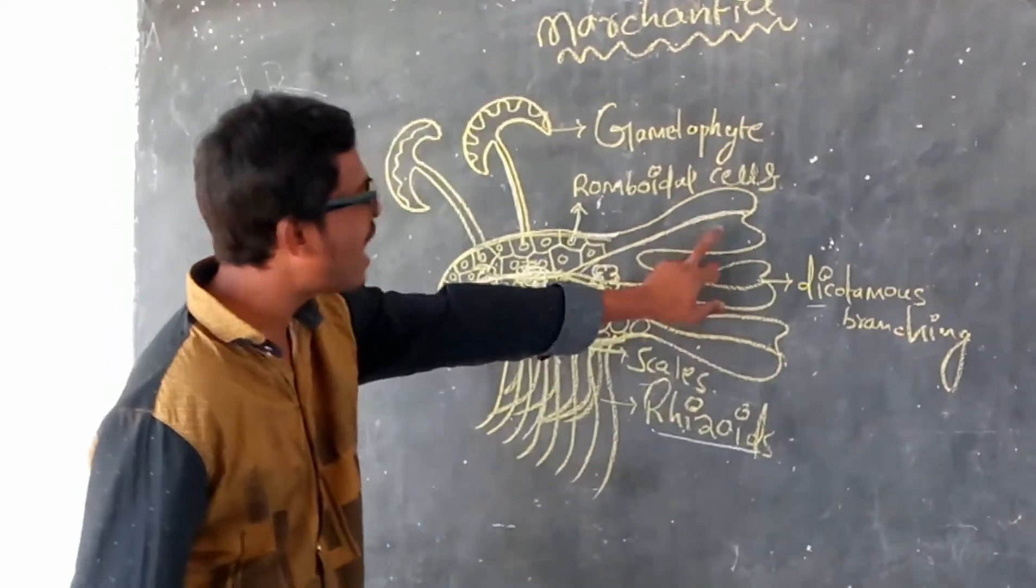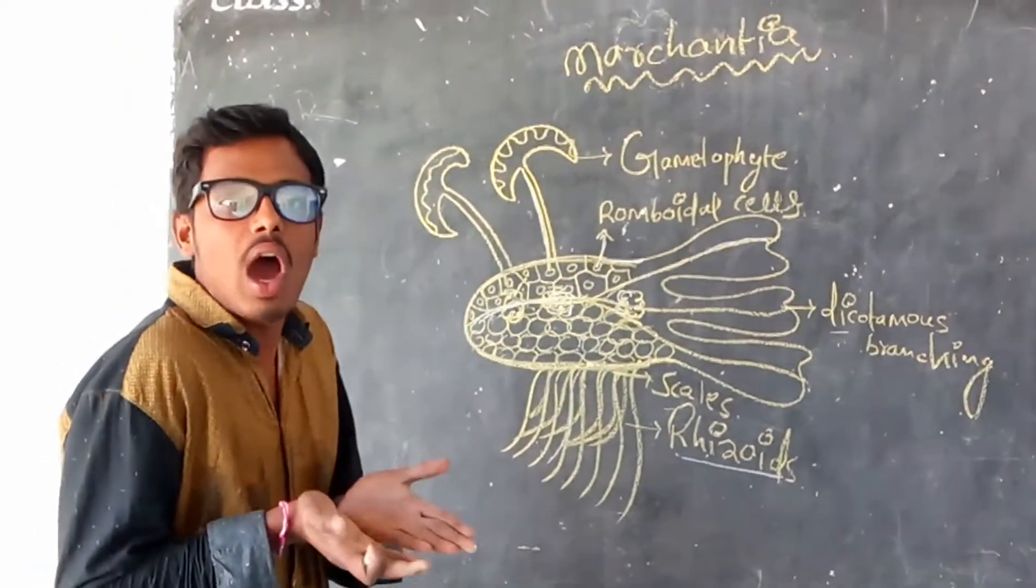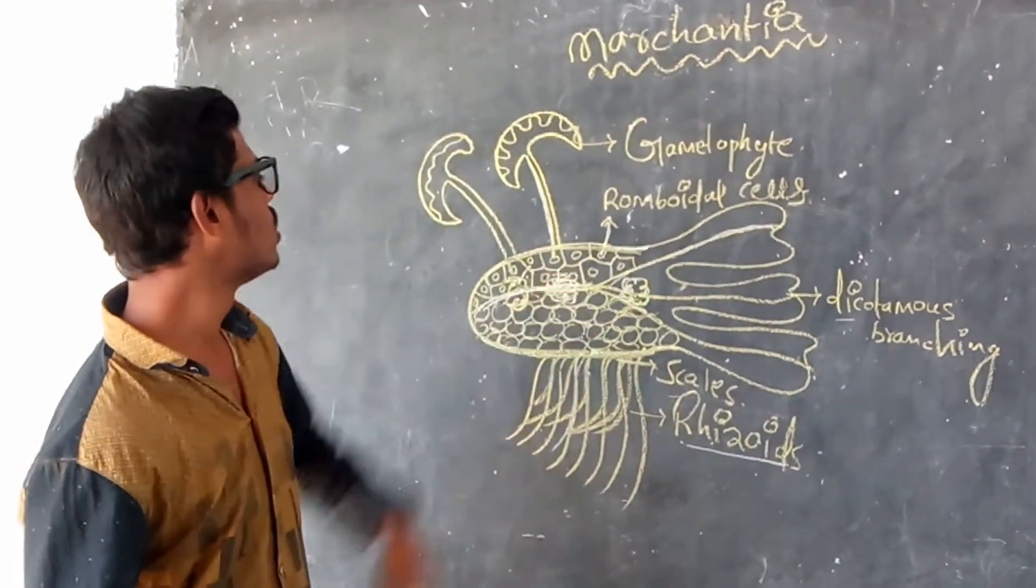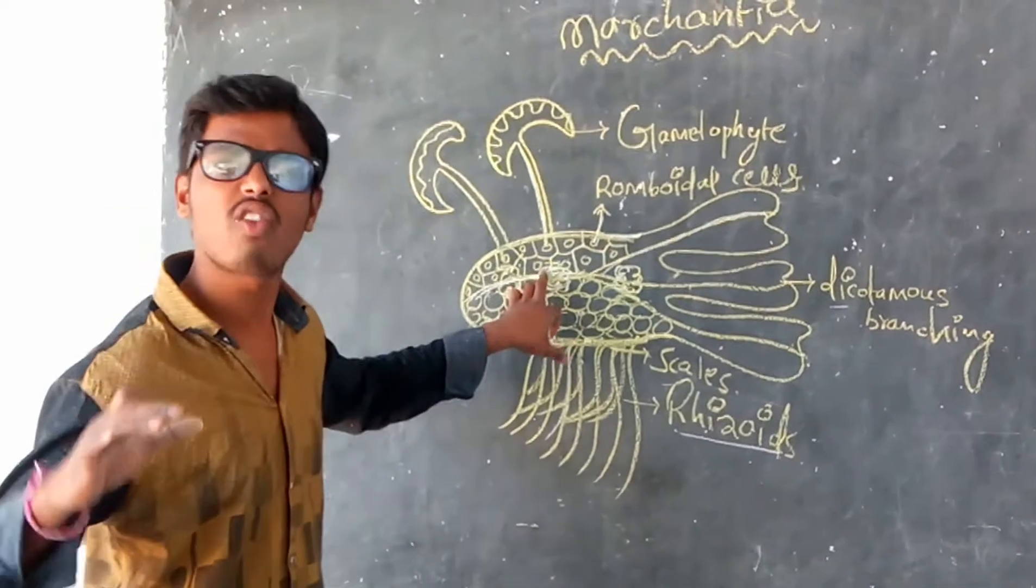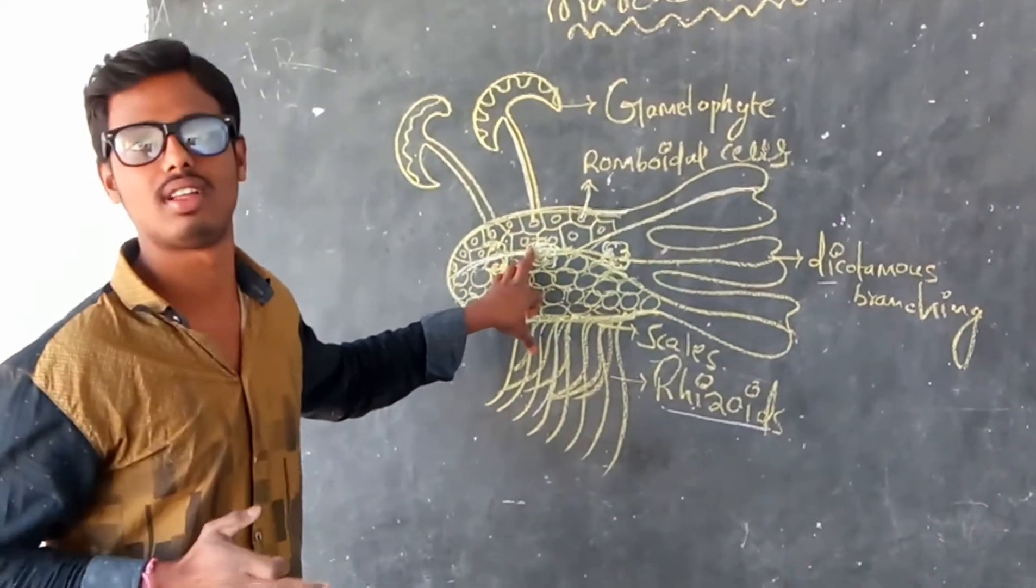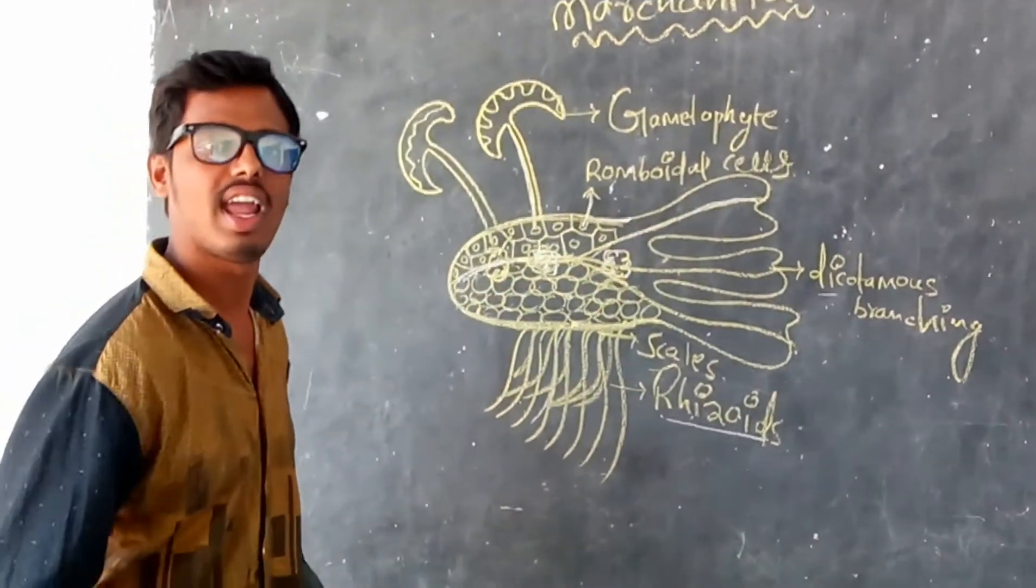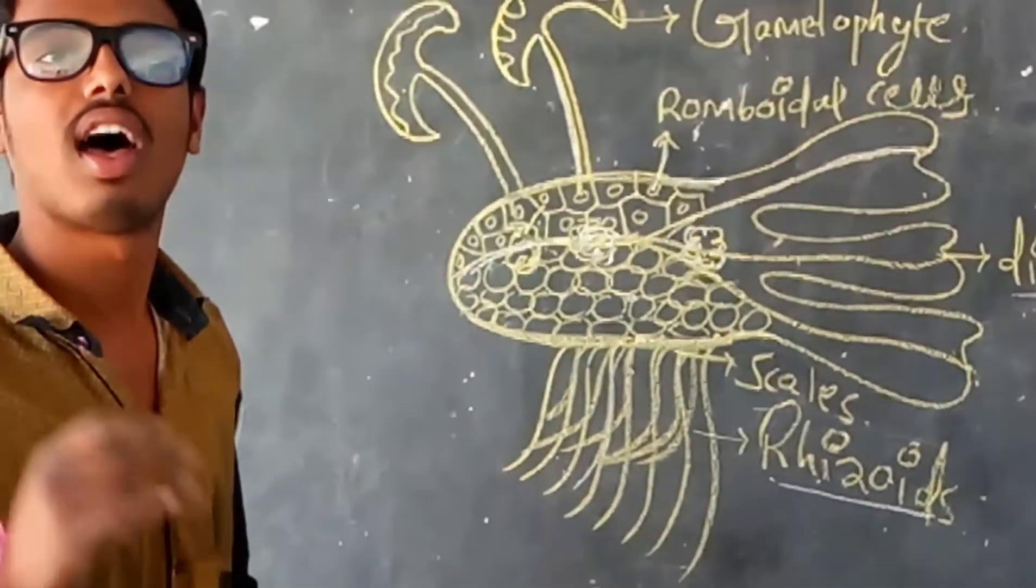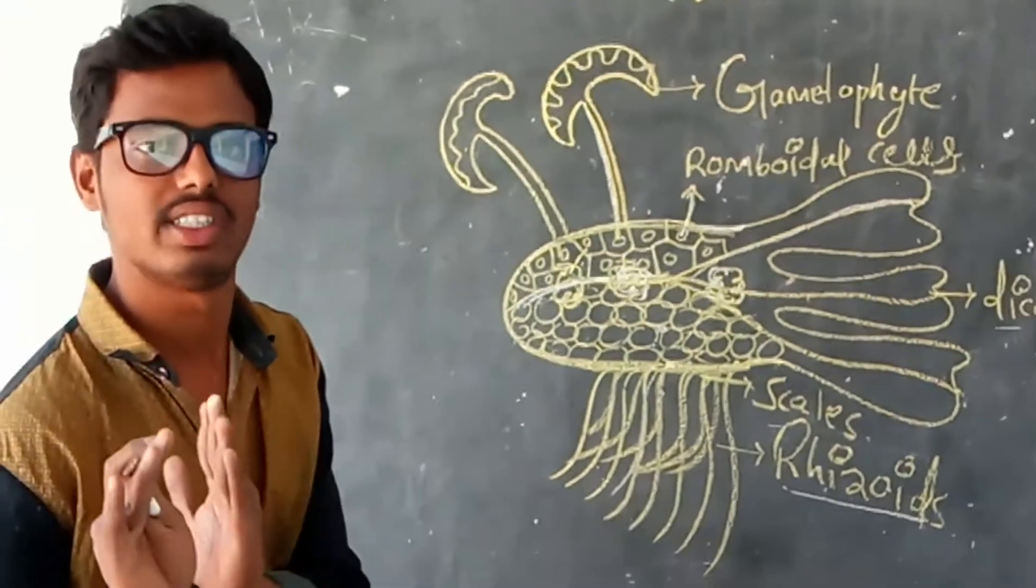This is the dorsal side. Dorsally, a number of rhomboidal structures we have to see. Every rhomboidal structure has one air pore. Every air pore indicates the edge of the chamber behind it.